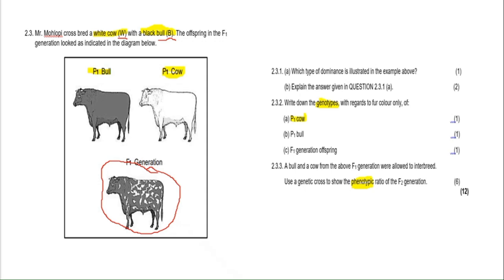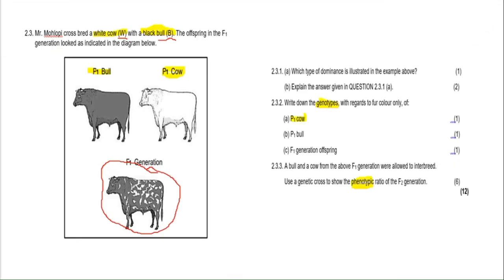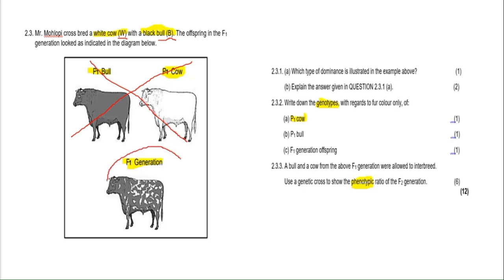I'm going to go straight to the answer, following it step by step. First question: what are you crossing — the P1 bull, the P1 cow, or the F1 generation? You're crossing the F1 generation here, so you can completely ignore the P1 and scratch that out to avoid confusion. You're crossing the F1 generation — and because you know the F1 was black and white, and you know the genotype from question C, you know it's BW.